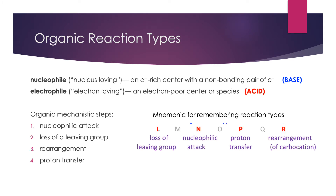You can remember these different organic reaction types by the following mnemonic. Think of the letters from L to R — L-M-N-O-P-Q-R — every other letter represents the first letter of one of these reaction types: L for loss of a leaving group, N for nucleophilic attack, P for proton transfer, and R for rearrangement. Now you can impress your friends by showing that you know all these reaction types from memory.